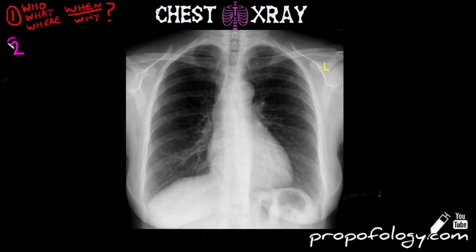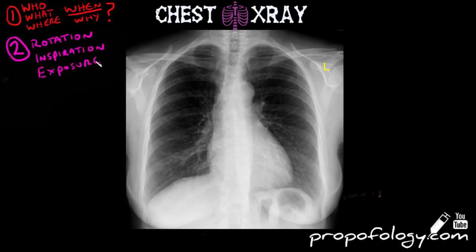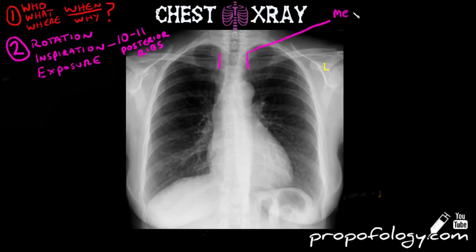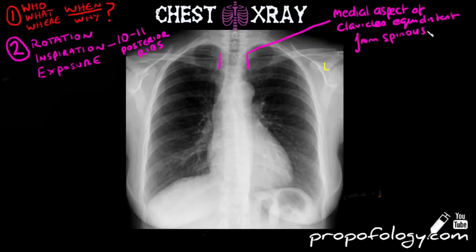Next you should look at the aspects that affect the quality of any given chest x-ray. Rotation: are the medial ends of the clavicles equidistant from the spinous processes? Inspiration: is it adequately inspired? Are 10 to 11 posterior ribs seen in each lung field? And how is it exposed — is it too bright, too dark, and can you see everything that you need to see?